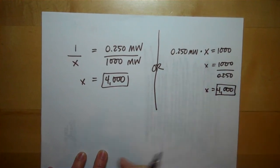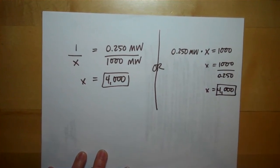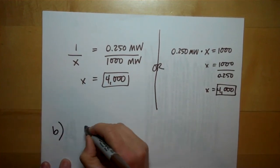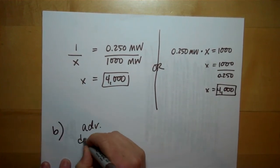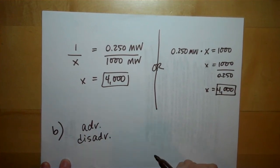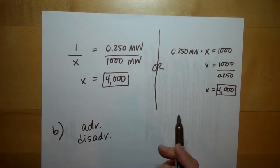So, 4,000 wind turbines needed to equal one nuclear power plant. Part B asks for advantages and disadvantages. We will discuss that in depth in class. I'm not going to get into it on the video. A lot of advantages and disadvantages of both. Especially the nuclear power.